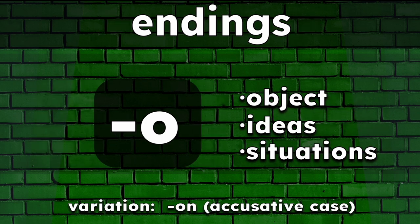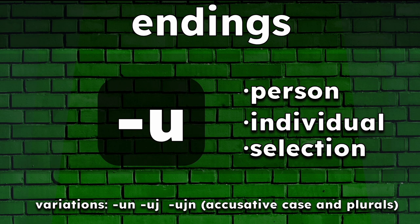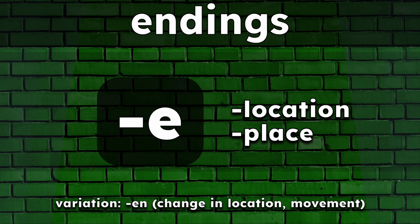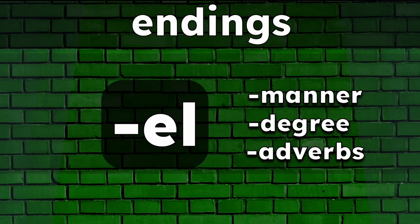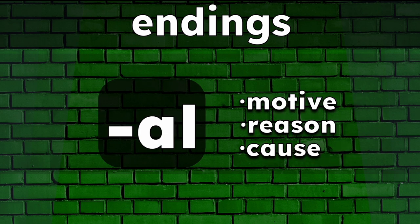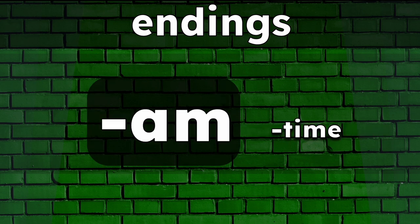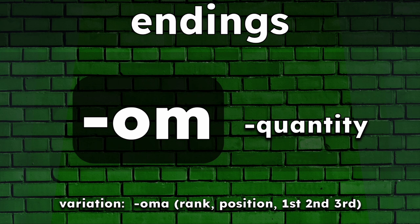Now let's cover the endings. -O is for objects, ideas, situations, and general nouns. We also have the variation -on for the accusative case. -U is for people, individuals, or selections; we also have -un, -uj, and -un for the accusative case and plurals. -A is for qualities and adjectives; we also have -an, -aj, and -ain. -E is for location or place; the accusative variation -en is for a change in location or movement toward a location. -El is for manner, degree, and adverbs. -Al represents motive, reason, or cause. -Es is for possession. -Am is for time. And -Om is for quantity; the variation -oma is for position or rank in a series, or ordinal numbers like first, second, or third.